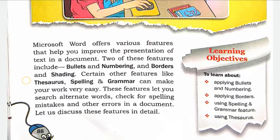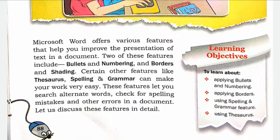Microsoft Word has a lot of features which we can use to improve the presentation. These features include bullets and numbering, borders, and other features like the thesaurus, spelling and grammar, which can make your work very easy. These features let you search for alternate words, check for spelling mistakes, and find other errors in a document.